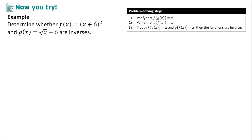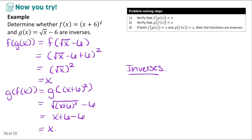Here we have f of x equals x plus 6 squared and g of x equals square root of x minus 6. When we plug in g of x, we have f of the square root of x minus 6, which simplifies to the square root of x squared, giving us x. Then plugging in x plus 6 squared for x gives us the square root of x plus 6 squared minus 6, which is x plus 6 minus 6, leaving us with x. Since both f of g of x and g of f of x equal x, these two functions are inverses.